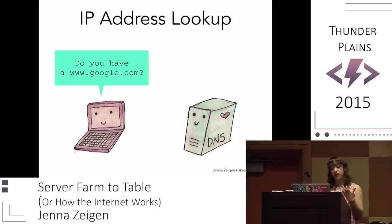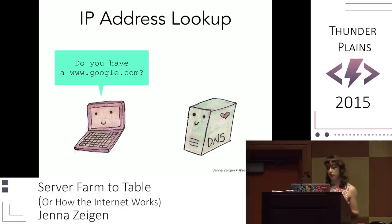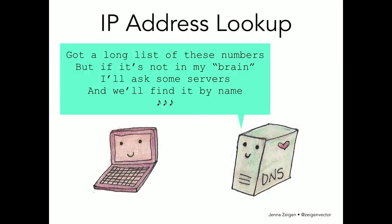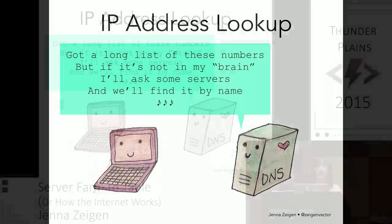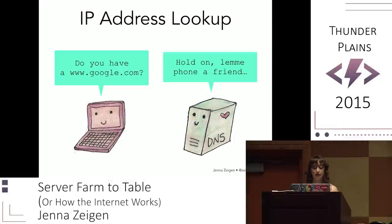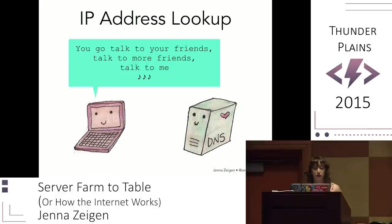Because UDP can only transmit a small amount of information, if this DNS request is too large it's going to use TCP, which we'll talk about soon. First, the DNS server is going to check its cache — caching is going to come up a lot in this talk. If the DNS server hasn't recently looked this up, it's going to go ask some other servers to get the IP address for www.google.com. This is a recursive process that could potentially take a bit of time, and the client just has to wait for the answer.